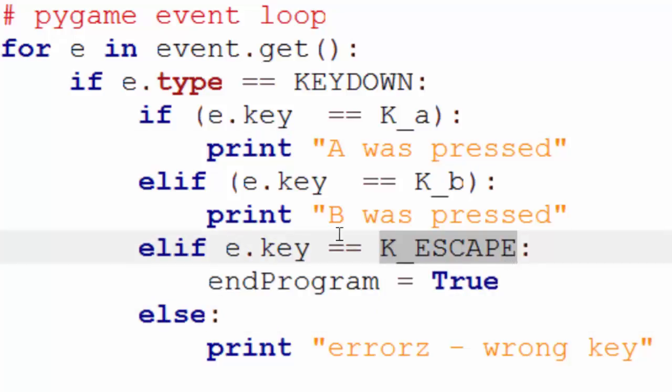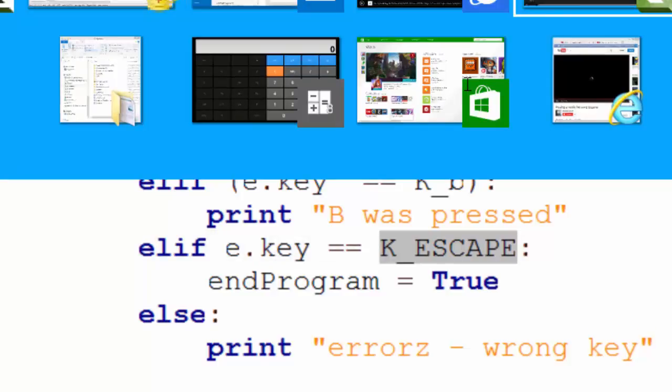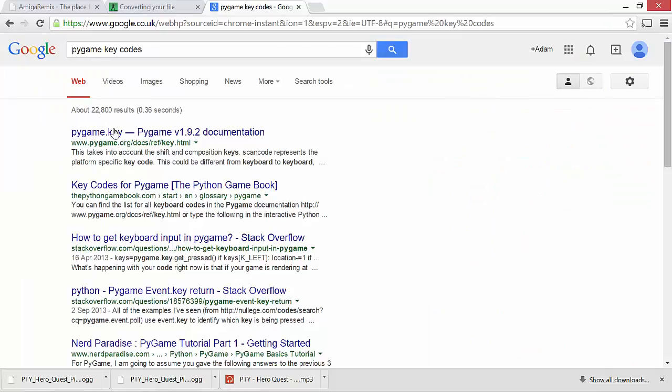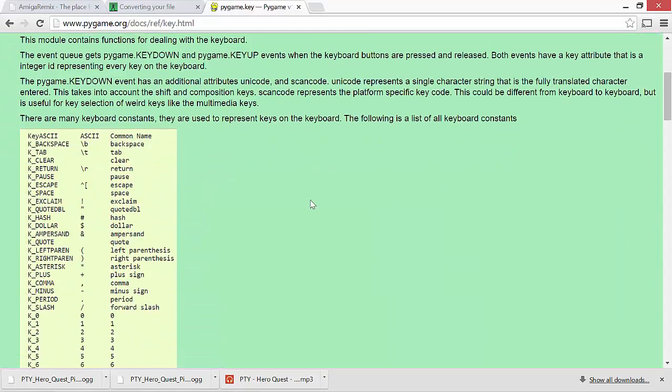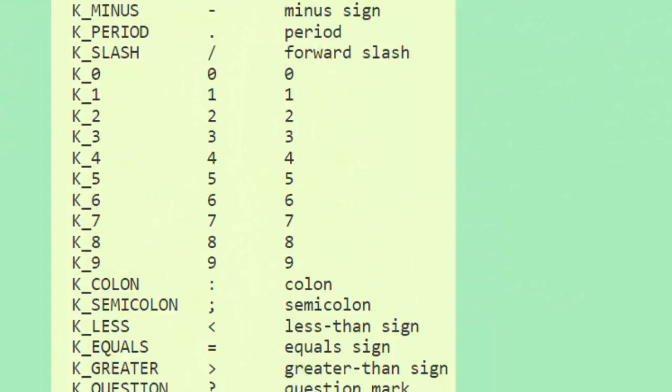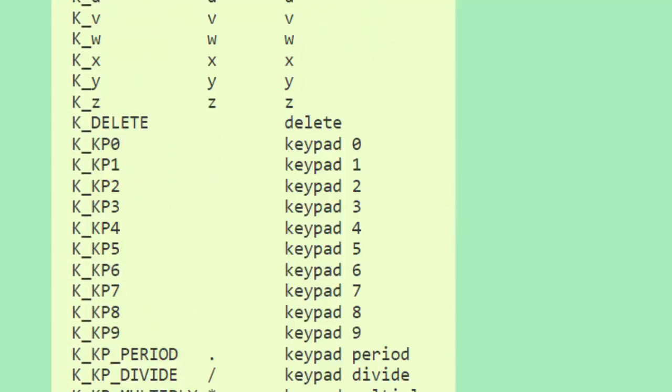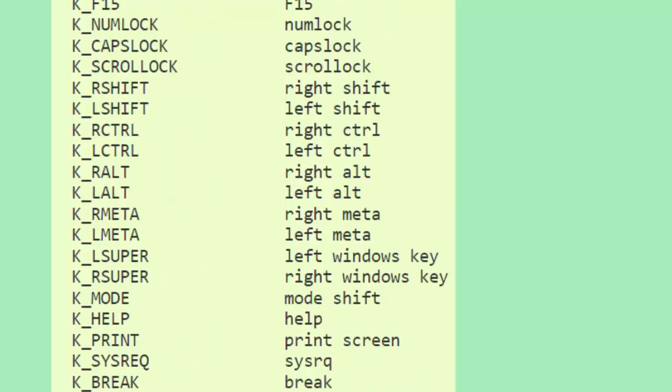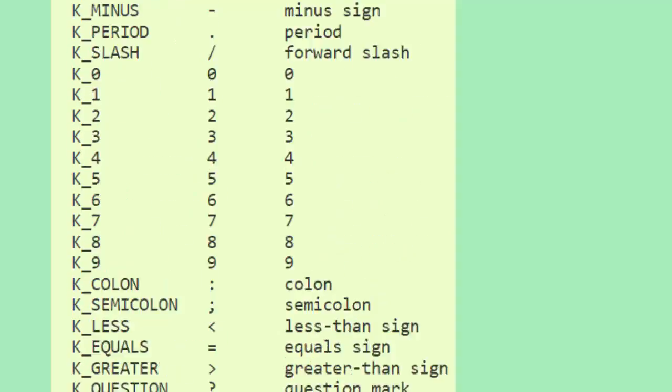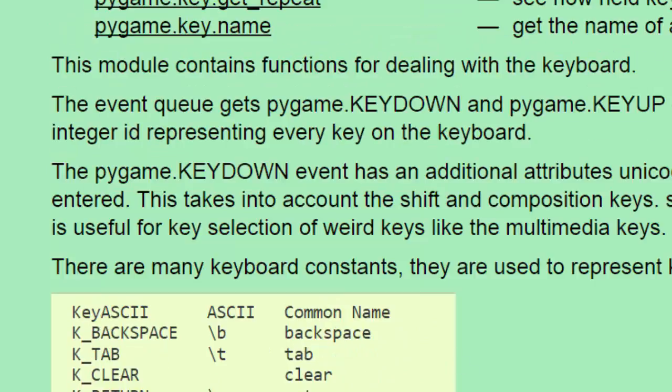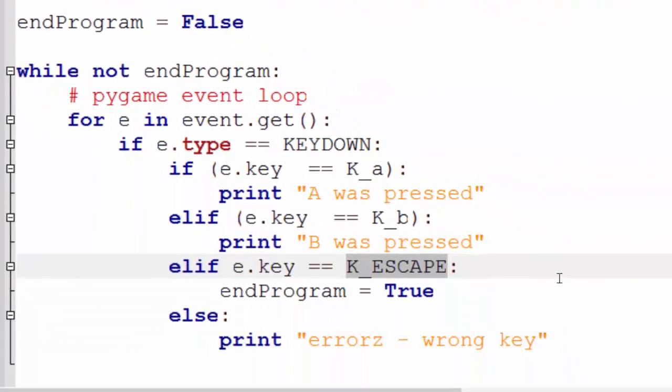Now you're probably wondering, well, where on earth are you getting all this k underscore escape, k underscore b, k underscore a? How do I know which one to use if you want, say, the up key arrow or the enter key? Well, there is a website. I'm going to go to the Pygame documentation. If you scroll down, here we go. We have all of the possible keys which you can use in your game. So you just simply have to use one of those in your program and you're away you go.